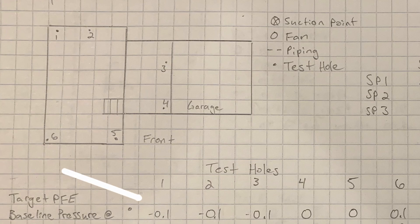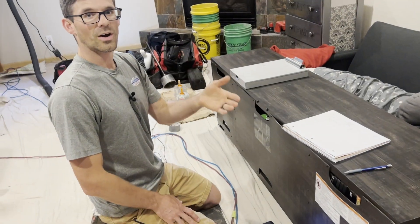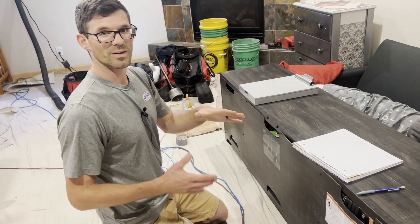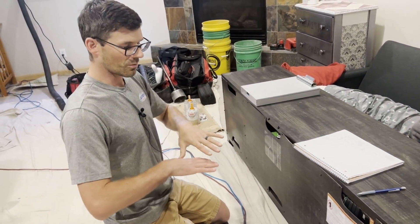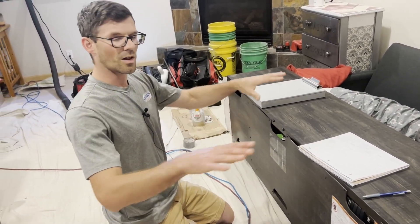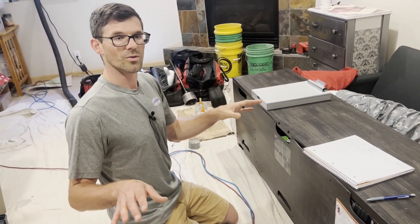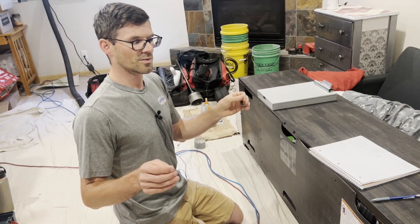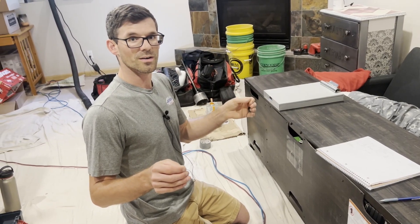So now we're going to record our baseline pressures and then figure out our target pressure. The target pressure field extension is what we want to see in all of our test holes once the system is up and running.